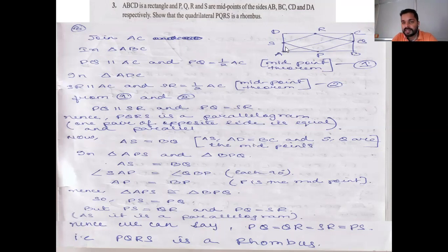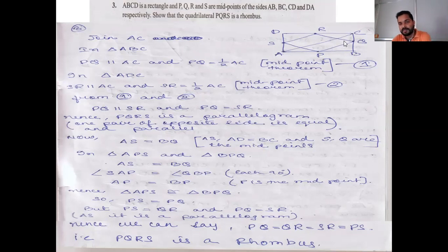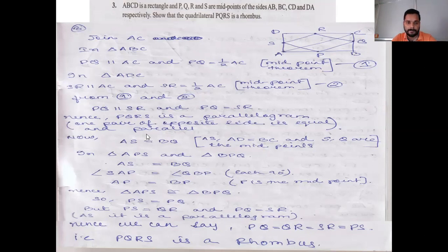Take two triangles: triangle APS and triangle BPQ. We will show these are congruent so that we can prove SP equals PQ — meaning adjacent sides of the parallelogram are equal. In triangle APS and triangle BPQ: AD equals BC because they are opposite sides of a rectangle. Since S and Q are midpoints, AS equals BQ.